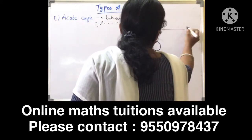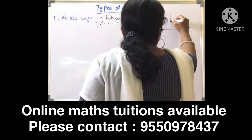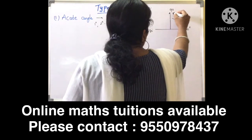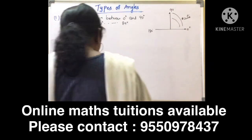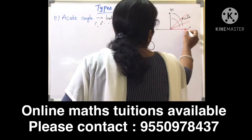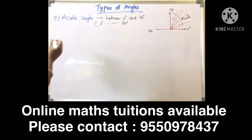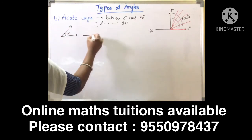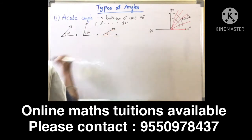On the protractor, from 0 degrees to 90 degrees, this part is called the acute angle region. The shape of an acute angle looks like this — for example, 30 degrees and 80 degrees. These are all shapes of acute angles. An angle whose measure lies between 0 and 90 degrees is called an acute angle.